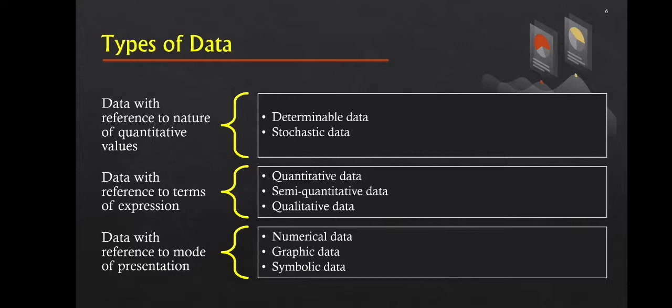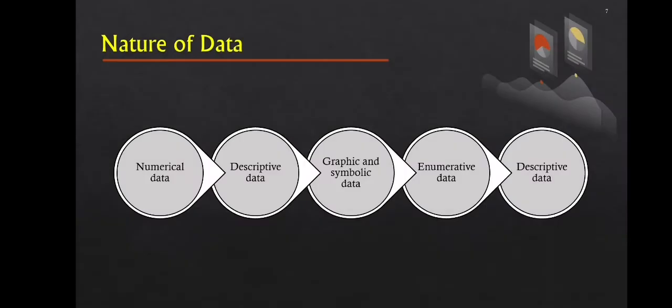Now, what is the nature of data? There are five natures of data: numeric data, descriptive data, graphic and symbolic data, enumerative data, and descriptive data. First is numeric data — in the sciences, all data is obtained by calculation and expressed as numerical values. The majority of the time they are numerical in nature. For semi-quantitative data, positive and negative responses are coded as 1 and 0.